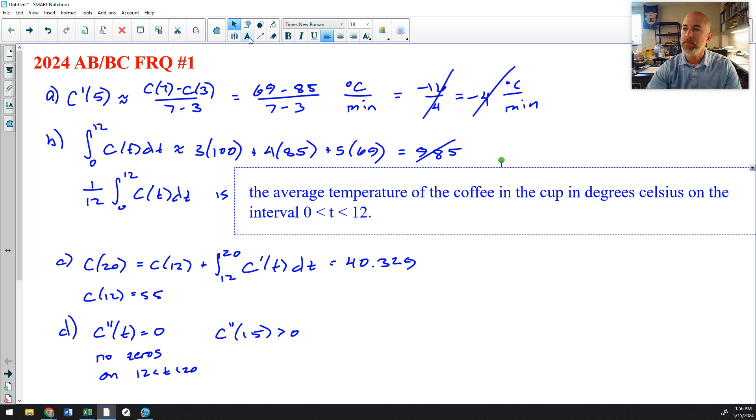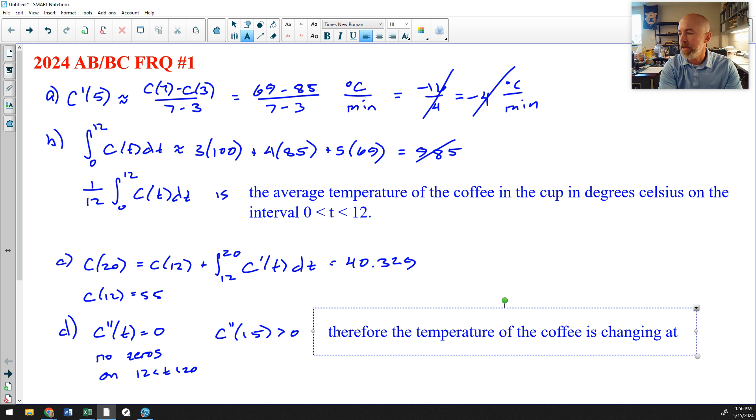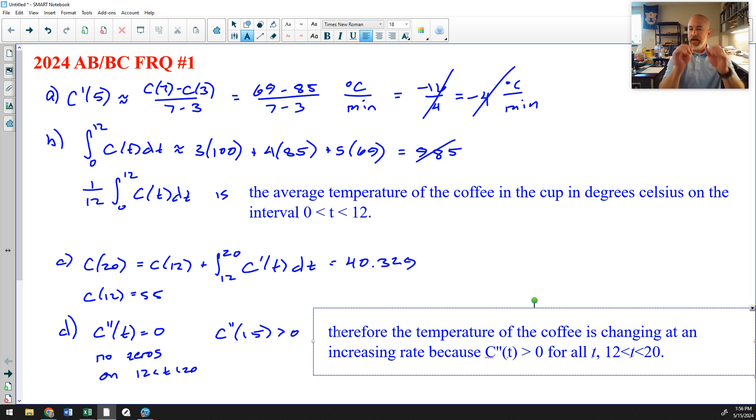Therefore, the temperature of the coffee is changing at an increasing rate because C double prime of T is greater than 0 for all T, 12 less than T less than 20. And I believe I have sufficiently answered this question. That is all four parts.